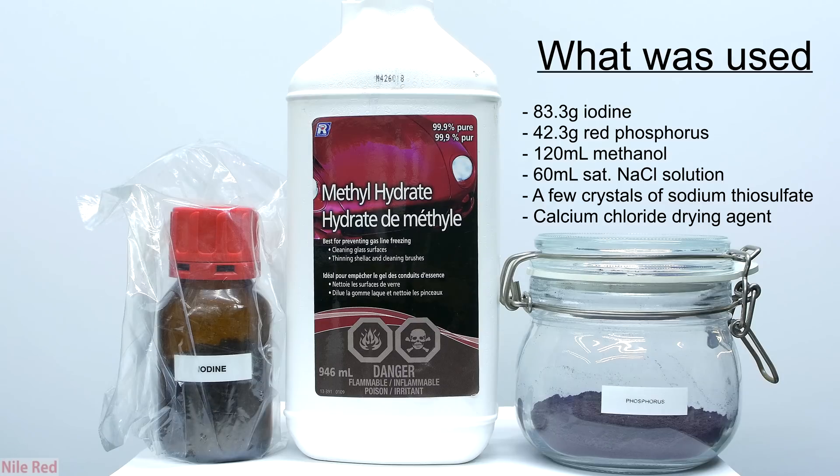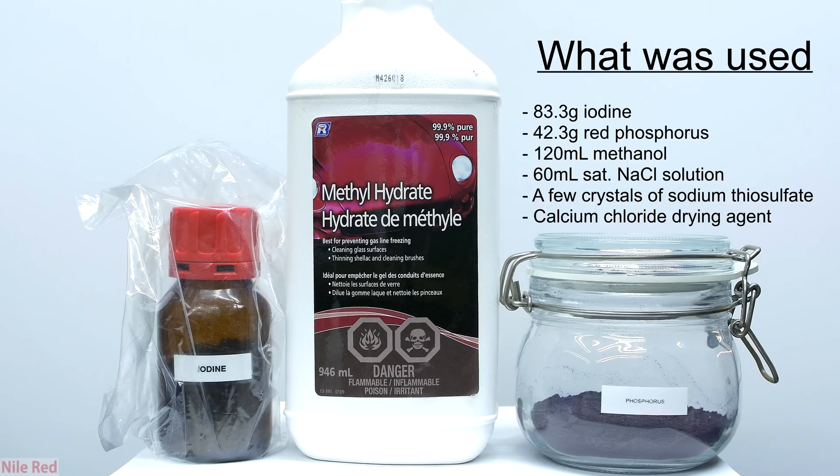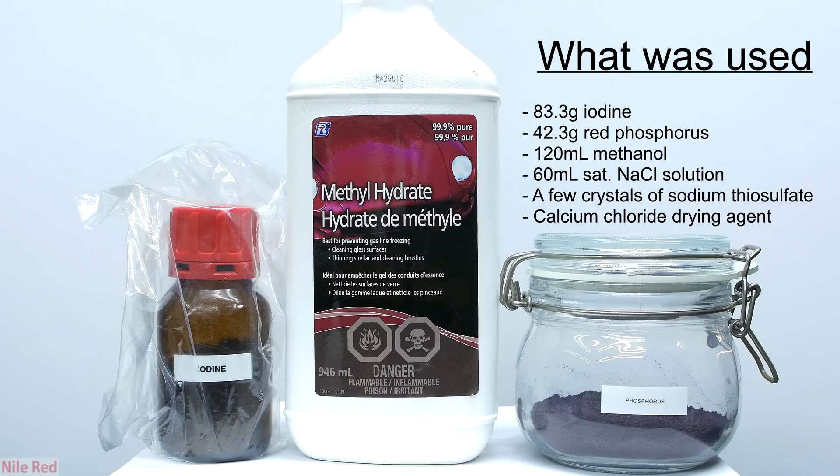We're going to be making methyl iodide the classic way from iodine, red phosphorus, and methanol. In terms of quantities, I used about 83.3 grams of iodine, 120 milliliters of methanol, and about 42.3 grams of red phosphorus.